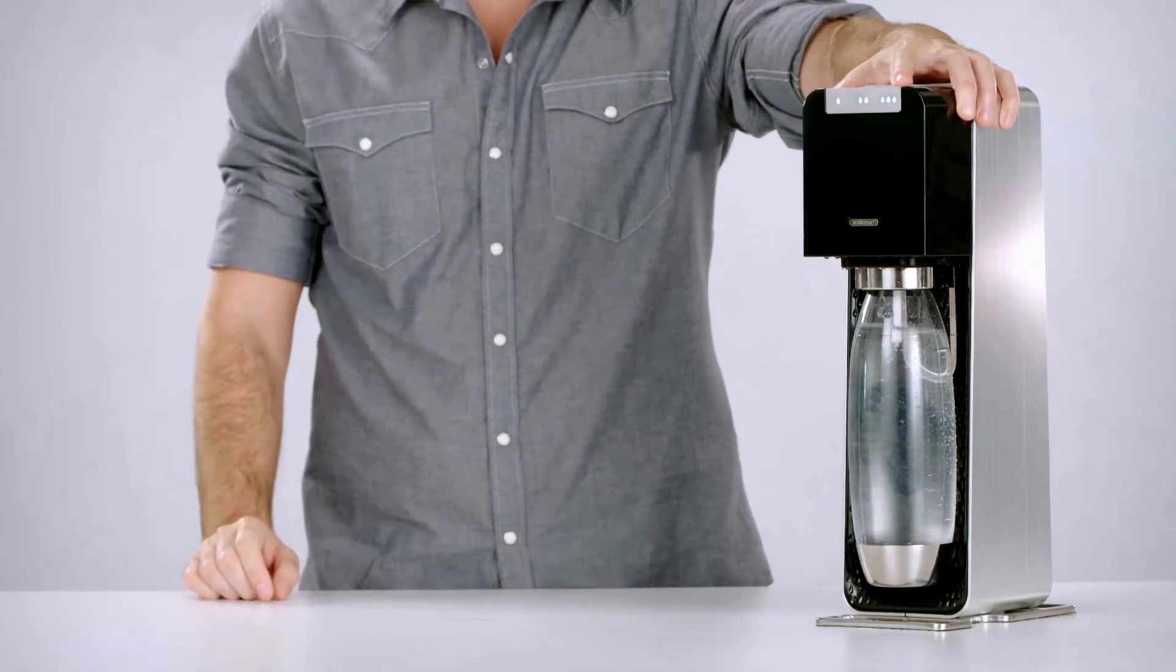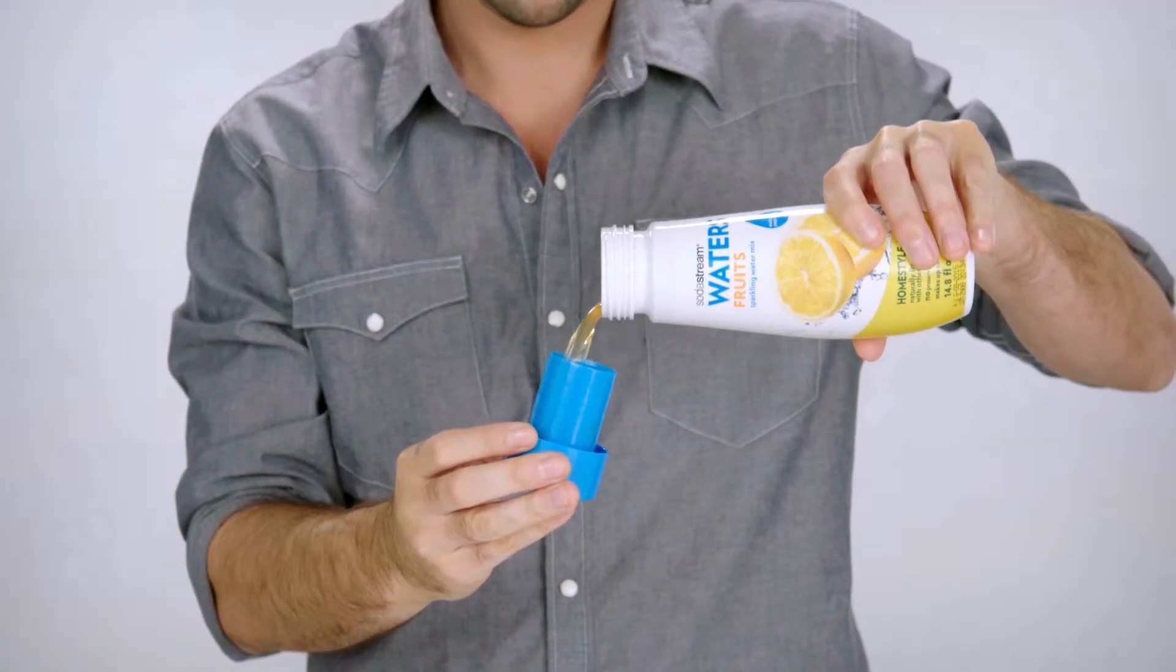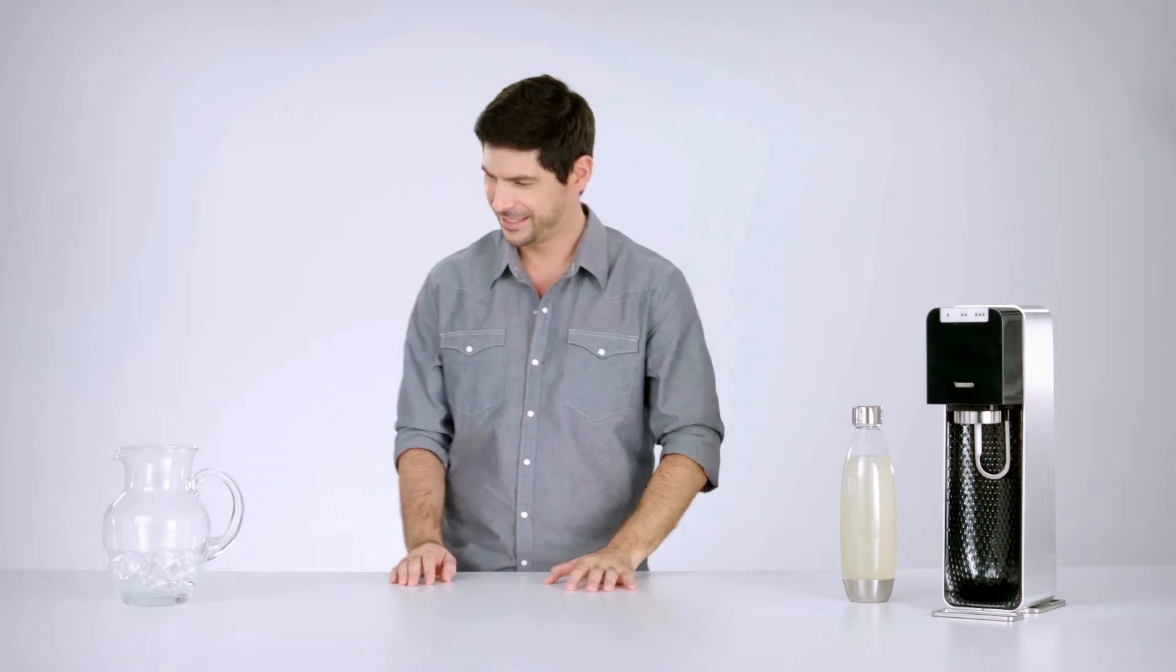Fizz 1 litre of cold fresh water with a SodaStream sparkling water maker. Add a shot of lemonade or pack in an extra punch by squeezing in a lemon.